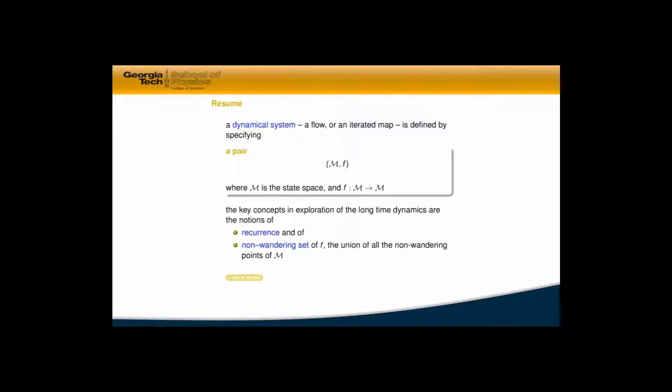So, to summarize what we have learned about dynamical systems: a dynamical system could be either a flow or an iterated map. It's a pair defined by state space and law of motion. The state space is lots of points, but the law of motion splits it into orbits.